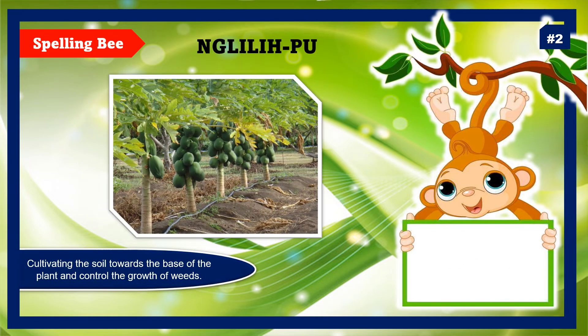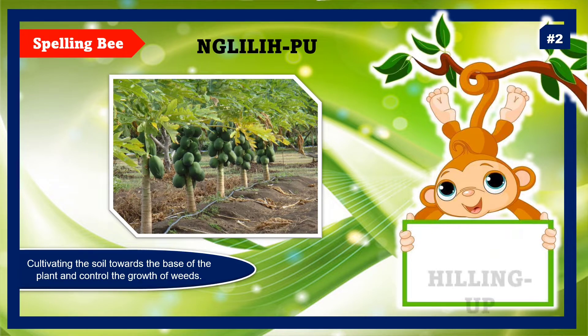Item number 2. Look at the jumbled letters and the picture. Your clue is: cultivating the soil towards the base of the plant and controlling the growth of weeds. The answer is hilling up.